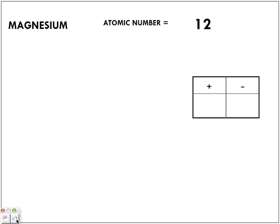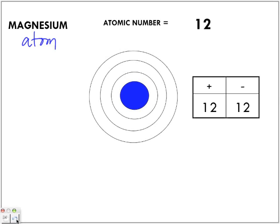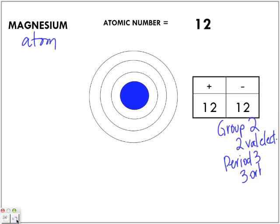Let's look at magnesium. Magnesium has an atomic number of 12 — the next atom in the periodic table. Because we've got the atomic number of 12, we're going to have 12 protons. Because this is a magnesium atom, it will also have 12 electrons — it's going to be neutral. Magnesium is in group two, so two valence electrons. We are in period three, so three orbitals or three shells or three energy levels.